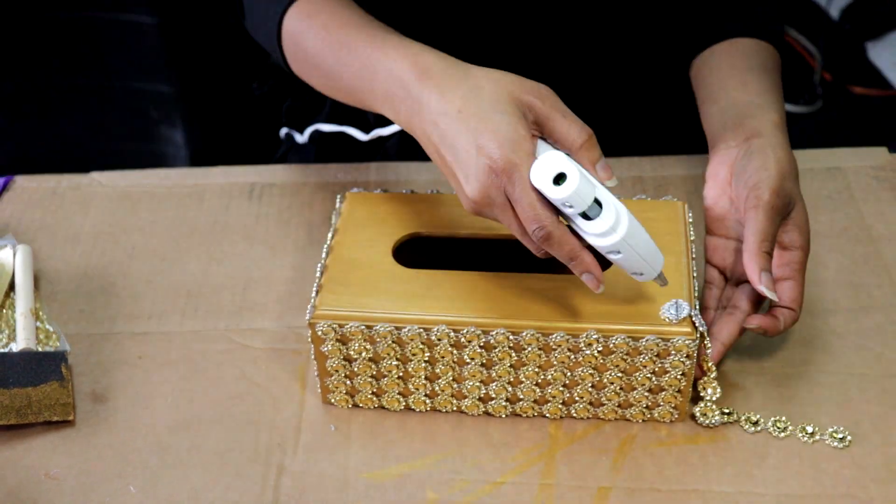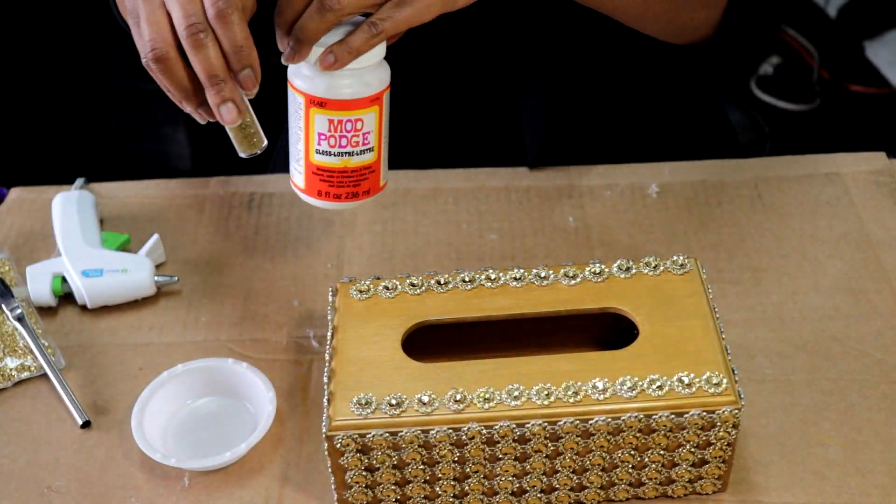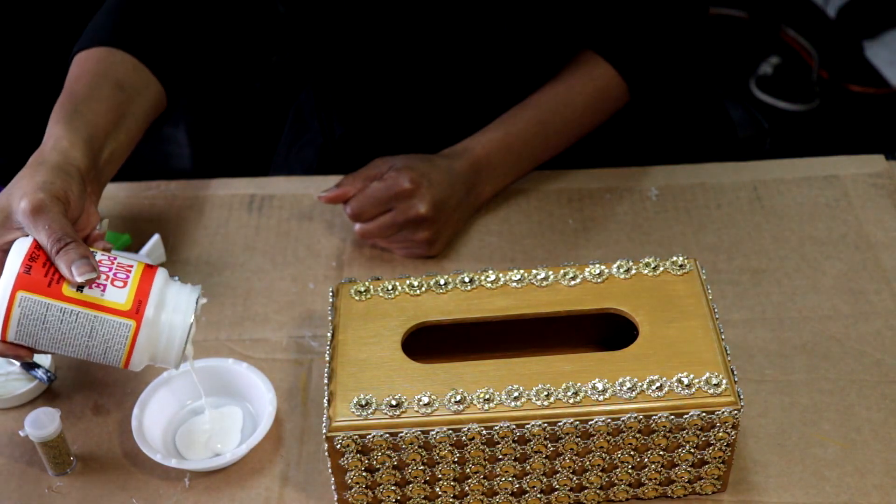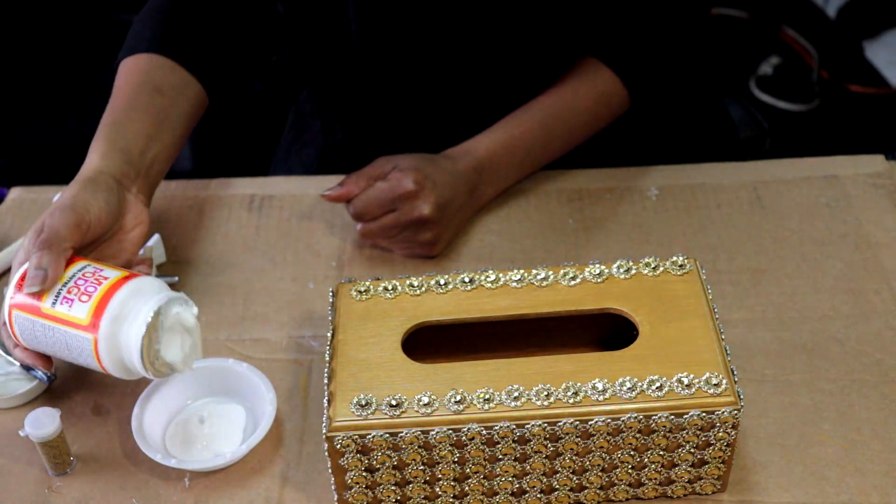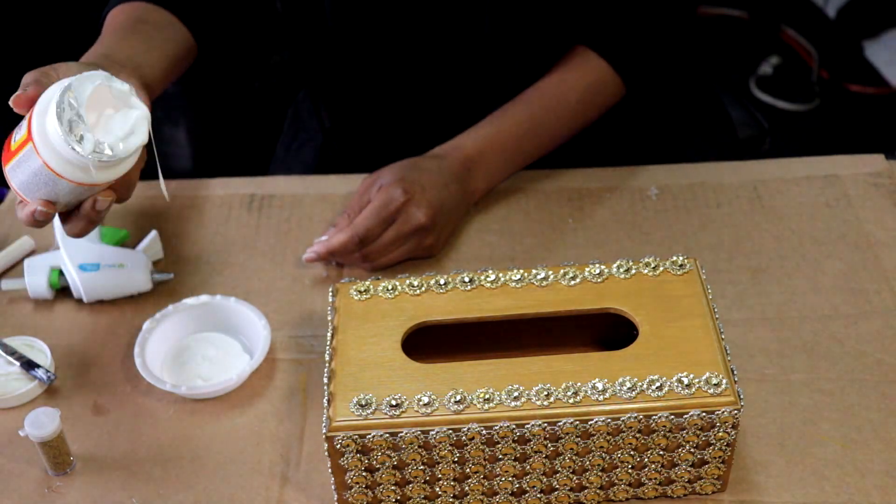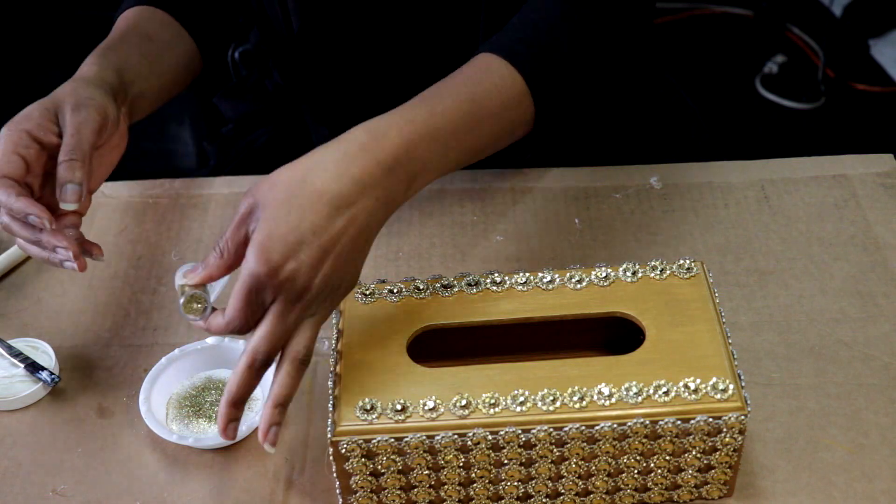After you apply your rhinestones, we're going to be using a plastic cup, Mod Podge, glitter, and crushed glass. Now we're going to add some Mod Podge into the cup and mix it in with some glitter. Then grab some gloves.